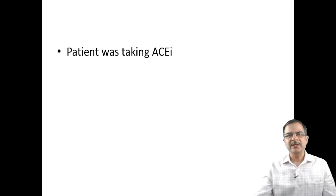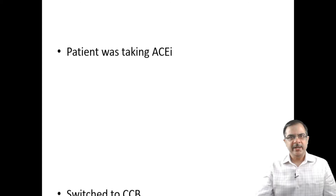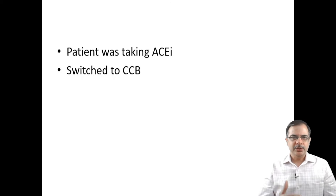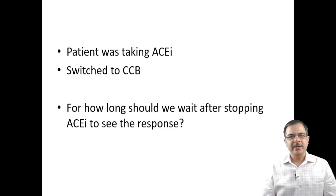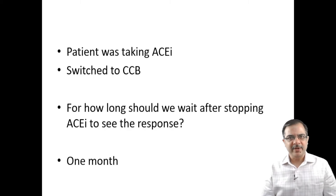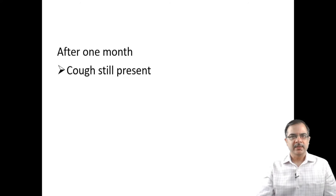Since the patient had hypertension and was taking an ACE inhibitor, the first possibility considered was ACE inhibitor-induced cough. We asked the patient to stop the ACE inhibitor and switch to a calcium channel blocker. We waited one month after stopping the ACE inhibitor to assess the response. The patient returned after one month, but the cough was still present, meaning the ACE inhibitor was not the cause.